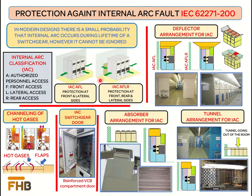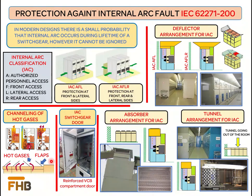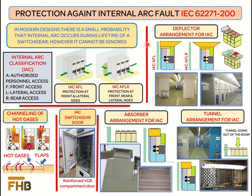The arc ducts provided within the switchgear play an important role in reducing the pressure within the enclosure in case of an arc fault. These ducts direct hot gases to the upper side of the switchgear, where gases are exhausted by the opening of flaps on the switchgear roof. These ducts are made in all three compartments of the switchgear containing power components: the cable compartment, the circuit breaker compartment, and the busbar compartment. In addition to the ducts inside the switchgear, there are three different arrangements to further safely channel the hot gases coming out of the switchgear.